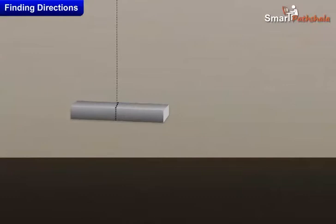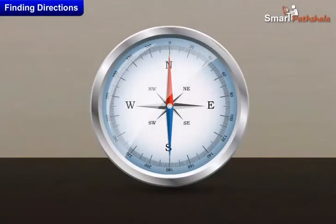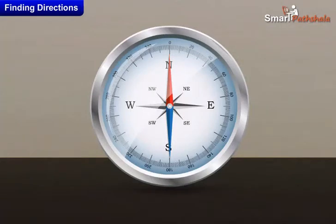In olden days travelers used to find directions by suspending natural magnets with a thread which they always carried with them. Based on this property of the magnet, a device was developed. It is known as the compass.